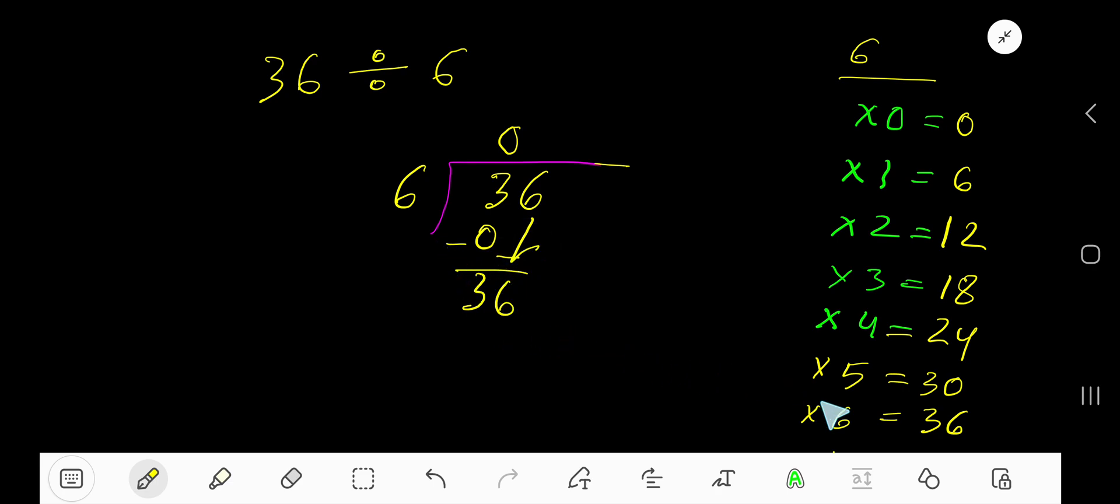So 6 goes into 36 how many times? 5 times is 30, 6 times is 36. So actually 6 times 6 is 36. If you subtract, your remainder is 0. Since your remainder is 0, you need to stop here.